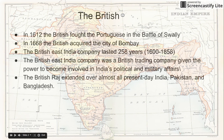In 1612, the British fought the Portuguese in the Battle of Swalley. In 1668, the British acquired the city of Bombay. The British Raj extended over almost all present-day India, Pakistan, and Bangladesh.